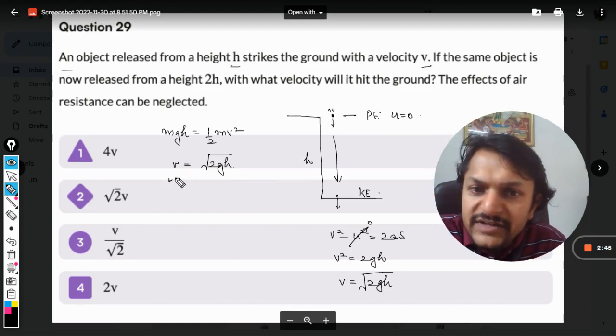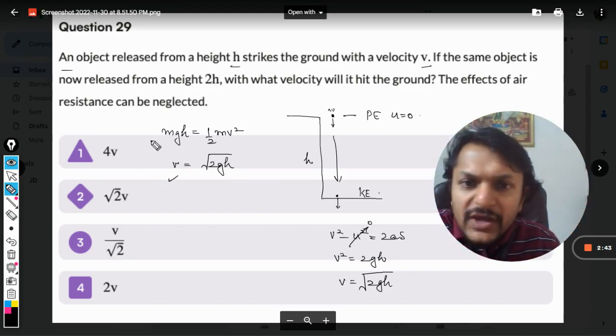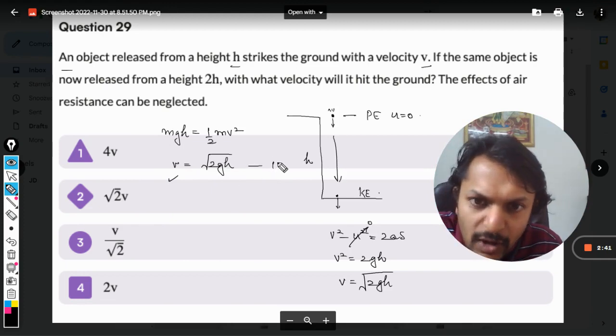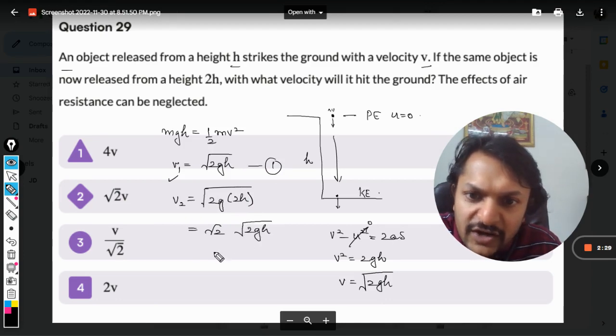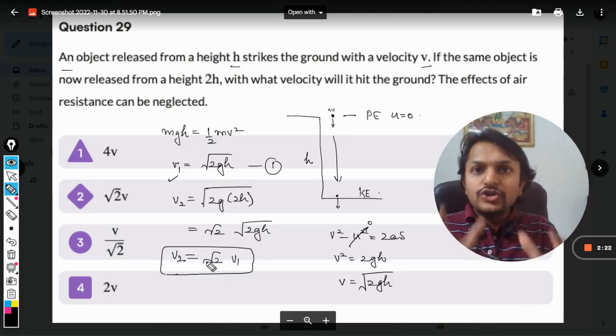Now, for the second case, the height is increased to 2h. This 2 can be separated from √(2gh), which can be substituted as v₁. So our new velocity is now √2 times the velocity that was attained in case number one.